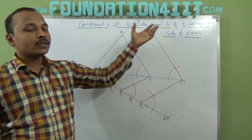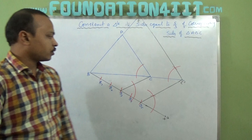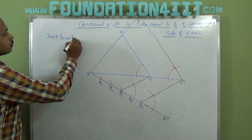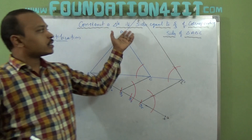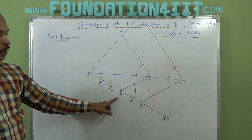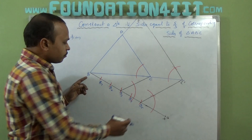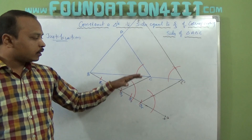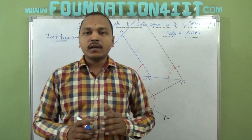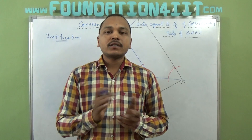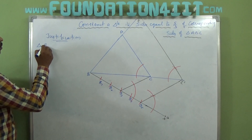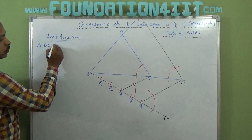Similarly all sides are in ratio 5/3. We mainly need to prove the sides are in the ratio 5/3. Now see the justification — every side is equal to 5/3 of the corresponding side. B to B3 is 3 parts and B to B5 is 5 parts. In triangle BB5C dash, line segment B3C is parallel to B5C dash. According to the Basic Proportional Theorem, a line parallel to one side of a triangle divides the other two sides in the same ratio.